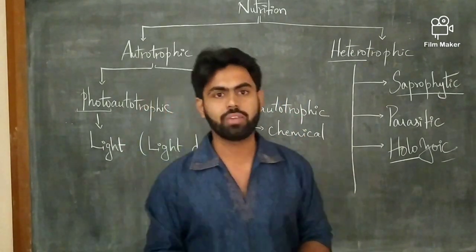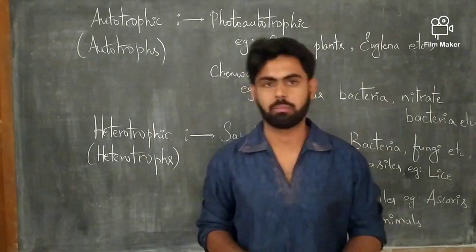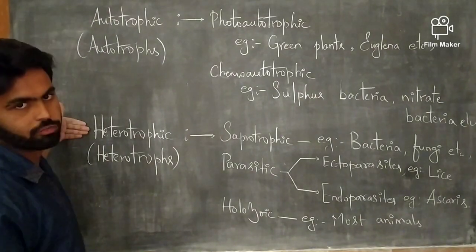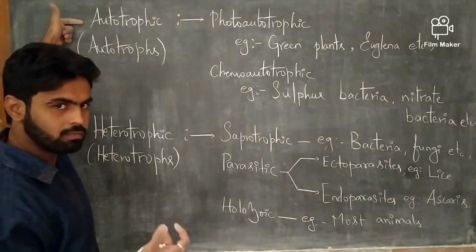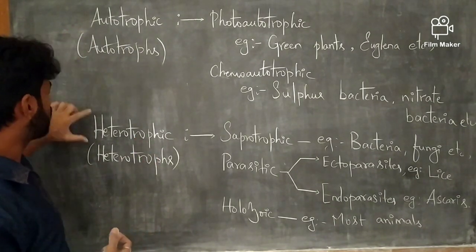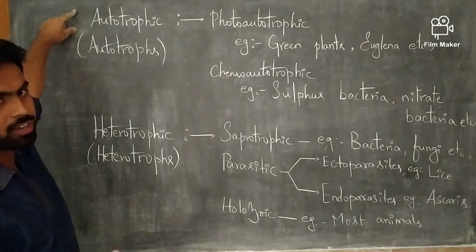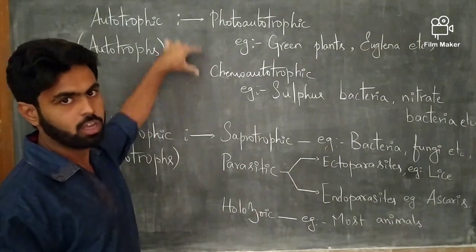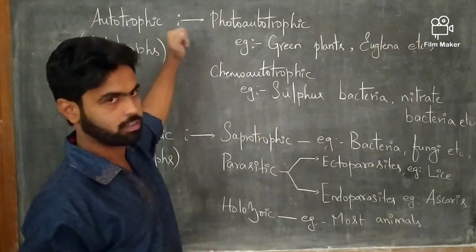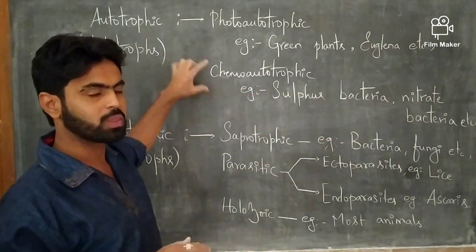So this is the simple classification of nutrition. Nutrition is classified into autotrophic and heterotrophic mode of nutrition. Organisms which belong to autotrophic synthesize their own food and are termed autotrophs, while organisms which depend on others are termed heterotrophs. Autotrophic mode is subdivided into photo-autotrophic and chemo-autotrophic. For example, photo-autotrophic organisms include green plants and Euglena, which synthesize food with the help of light. Chemo-autotrophic organisms include sulphur bacteria and nitrate bacteria, which synthesize food with the help of chemical substances.